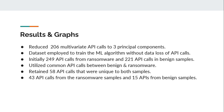The researchers further reduced their 206 multivariate API calls to three principal components. The dataset was then employed to train the ML algorithm without data loss of API calls. The initial observation had 249 API calls from ransomware samples compared to 221 API calls in benign samples. They utilized the common API calls between benign and ransomware, retaining 58 API calls unique to both samples — 43 from ransomware samples and 15 from benign samples.